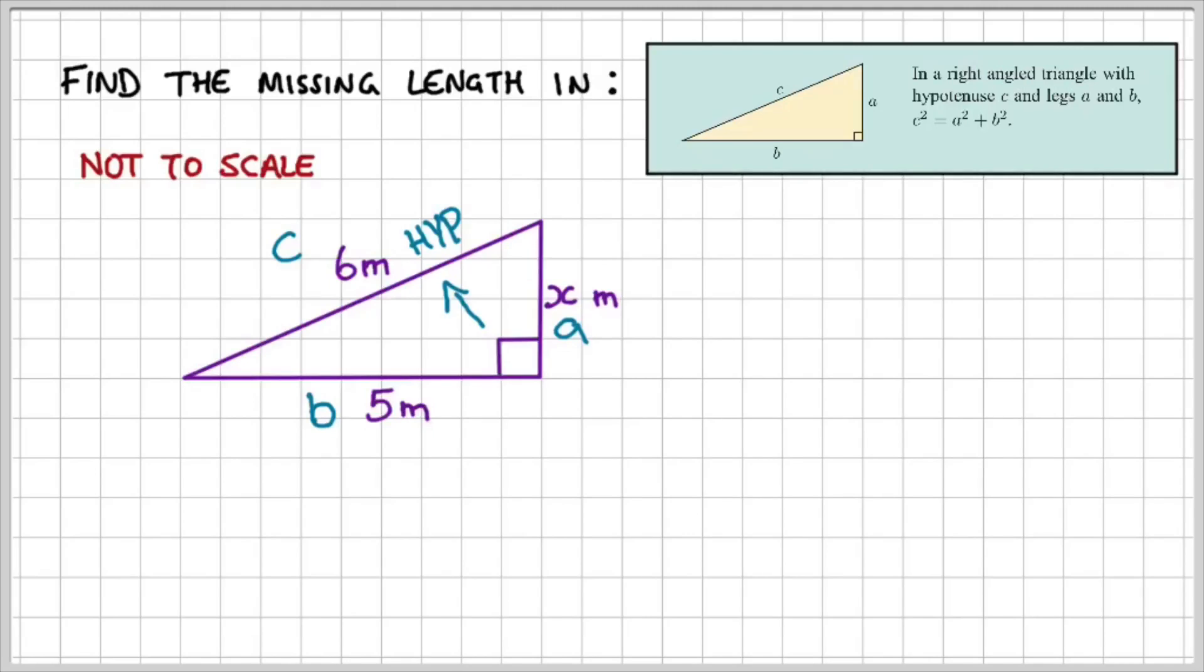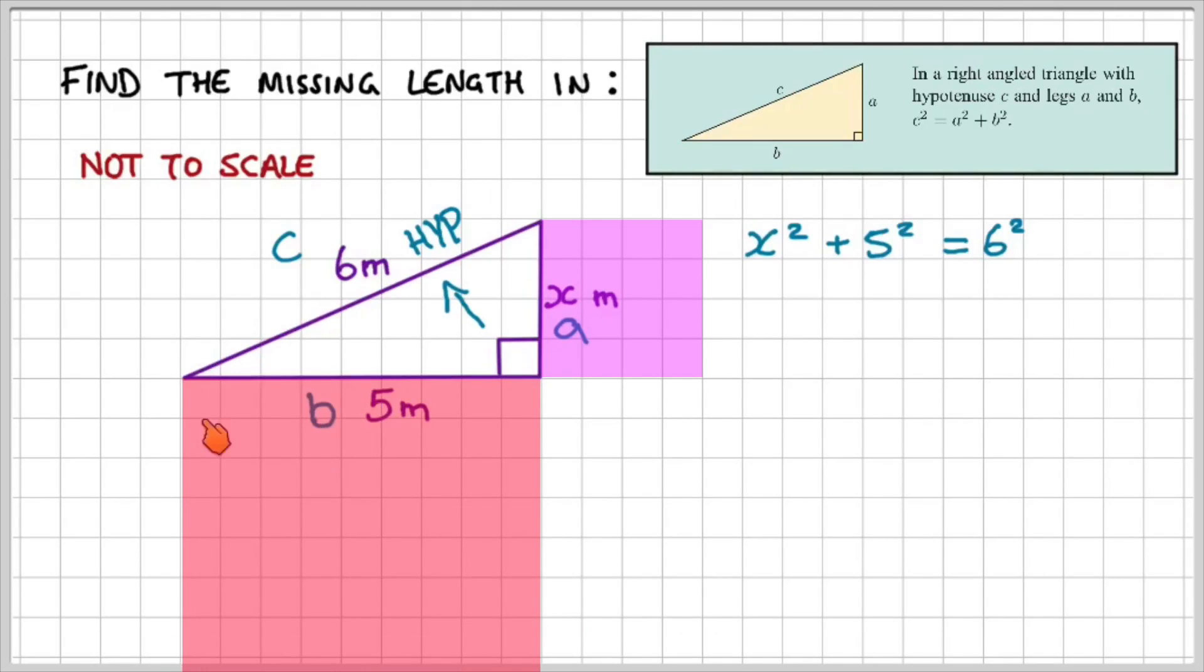Now since we have a variable for our unknown, which is X, we'll use that in our equation. So we'll set up the equation. X² + 5² = 6². So what that means then is that the square of X plus the square of 5 will give us the square of the hypotenuse, which is 6.